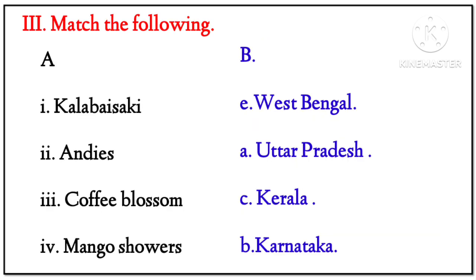Question 3 — Match the following: Kalbaisakhi → West Bengal; Andhi → Uttar Pradesh; Coffee Blossoms → Kerala; Mango Showers → Karnataka.